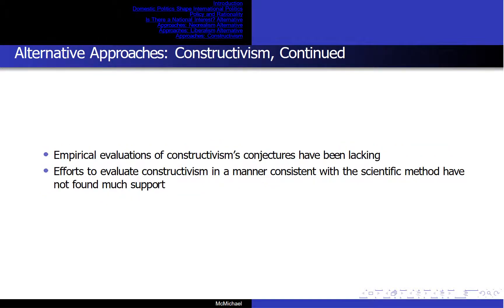Empirical evaluations of constructivism's conjectures have been lacking. Constructivists have tended to select cases based on how the dependent variable turned out, rather than drawing cases at random to see whether their independent variables — norms, persuasion, or pressure — produce the predictive effect of altered values or improved behavior. Efforts to evaluate constructivism consistent with the scientific method have not found much support. Rational actor models and large-sample statistical analyses (Koenig 2007, Shareef 2010) highlight selection effects and contradict case studies that support constructivism.